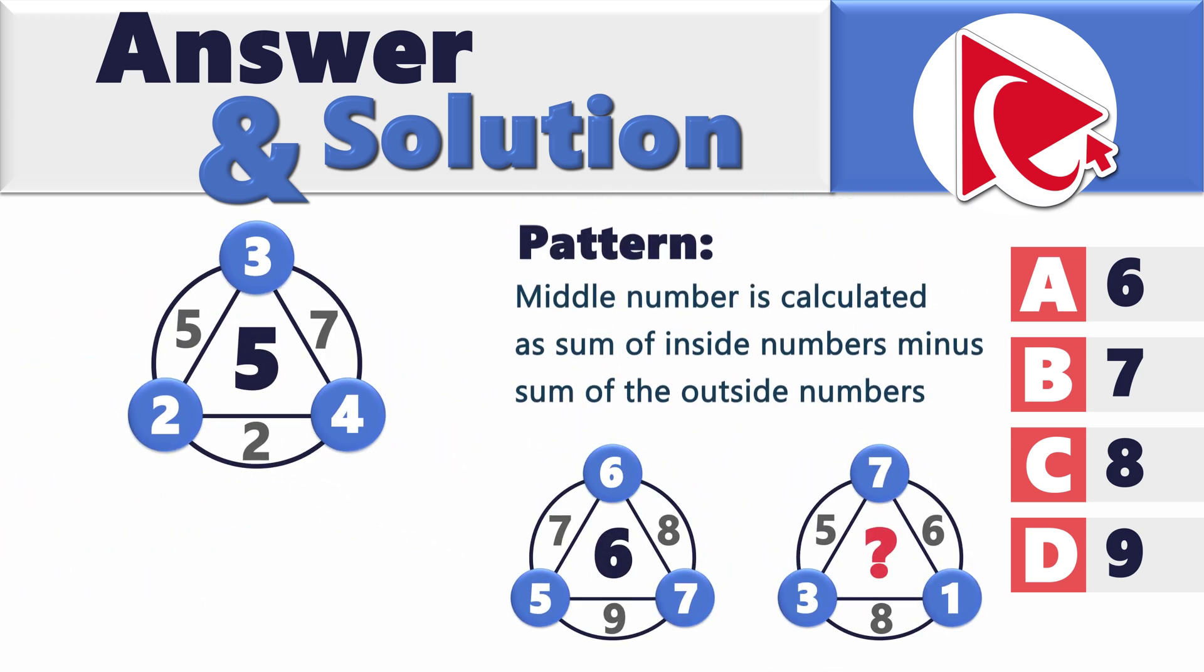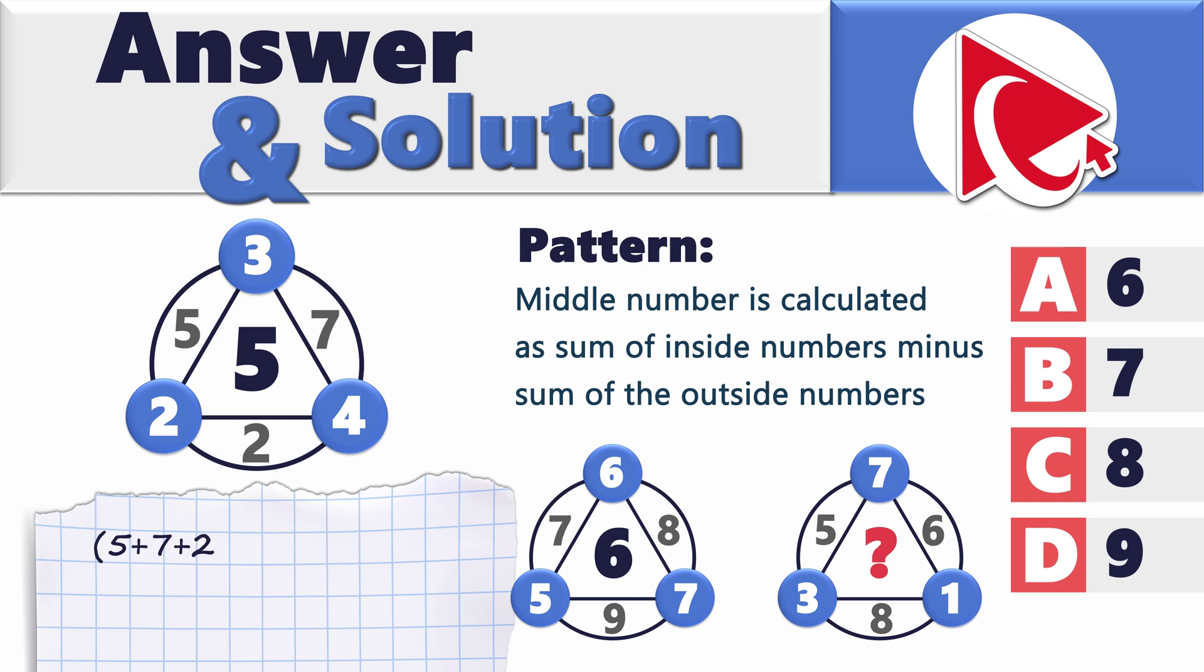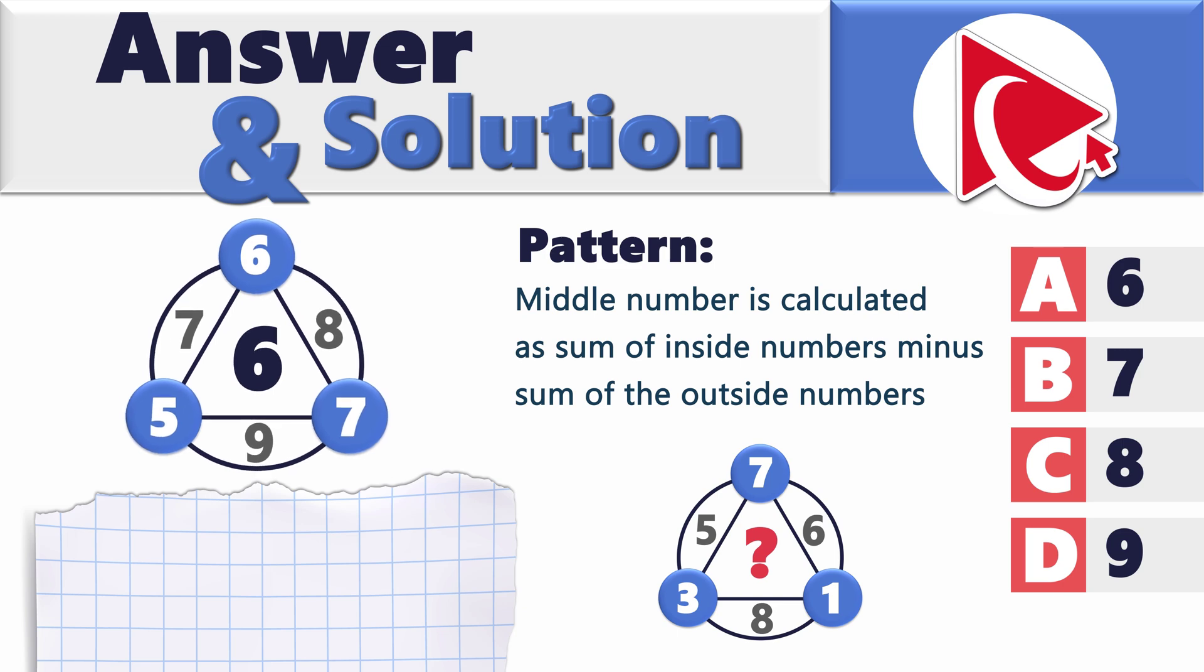Let's look at the examples. For example, the first middle number 5 is calculated as the sum of inside numbers 5, 7, and 2 minus sum of the outside numbers 2, 3, and 4. 5 plus 7 plus 2 minus 2 plus 3 plus 4 equals 5. The calculations for the second shape are very similar. 7 plus 8 plus 9 minus sum of 5 plus 6 plus 7 equals 6.